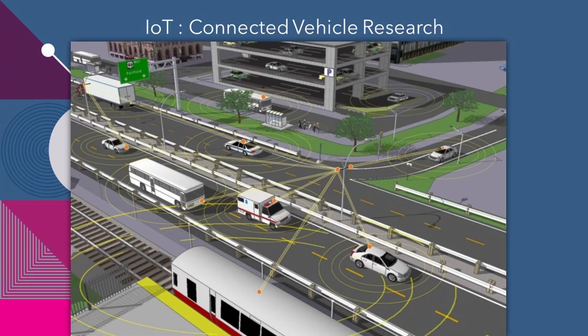IoT refers to the network of physical devices, vehicles, appliances and other objects embedded with sensors, software and connectivity, enabling them to collect and exchange data over the internet. These devices are typically equipped with sensors and actuators that allow them to interact with the physical world and communicate with each other as well as with other systems and applications. IoT enables the seamless integration of physical objects into the digital world, creating intelligent systems that can monitor, control and optimize. It has applications in various sectors including smart homes, smart cities, healthcare, agriculture, transportation and manufacturing.